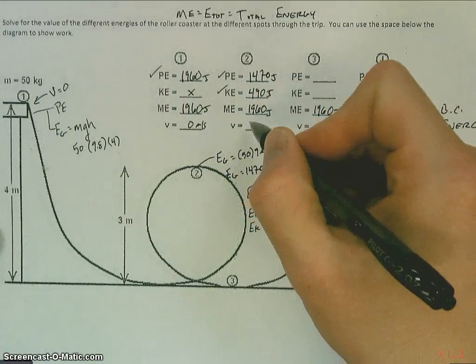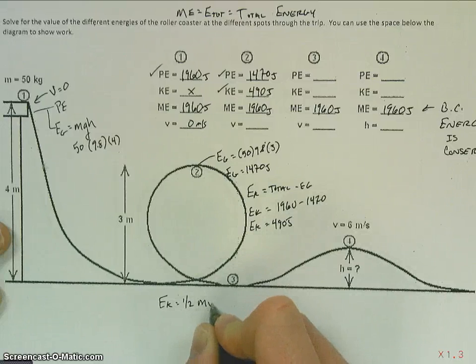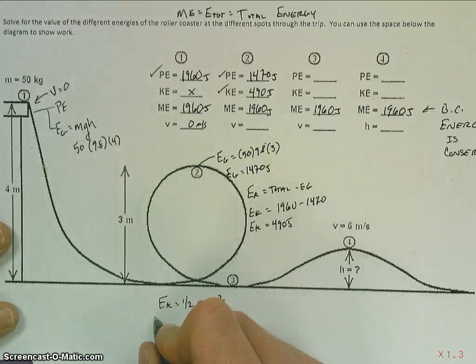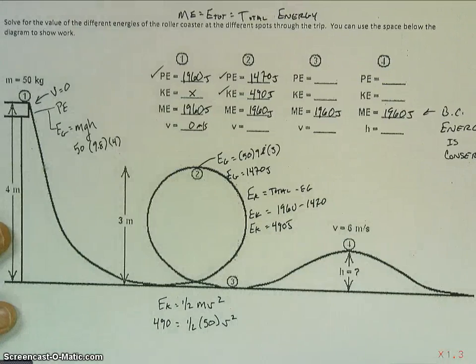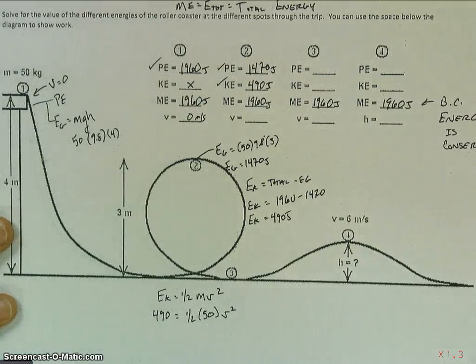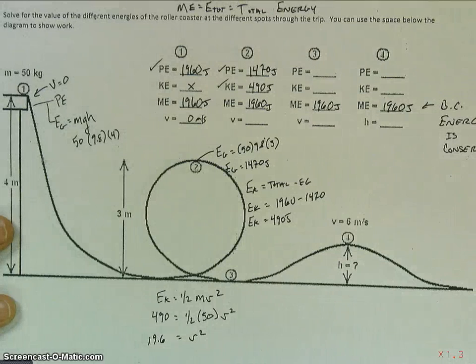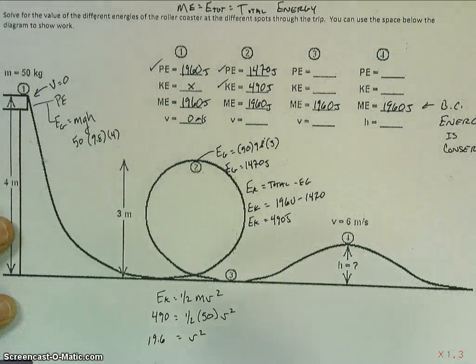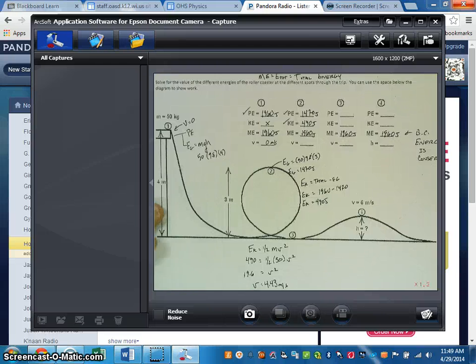Now that I have that I can solve for my velocity. I know EK is equal to one half mv squared. So EK we have is 490 is equal to one half times the mass 50 times the velocity squared. And then this just becomes an algebra problem. Divide both sides by 50, multiply both sides by half. So I get 19.6 is equal to v squared. So we take the square root of 19.6. We should get 4.43.